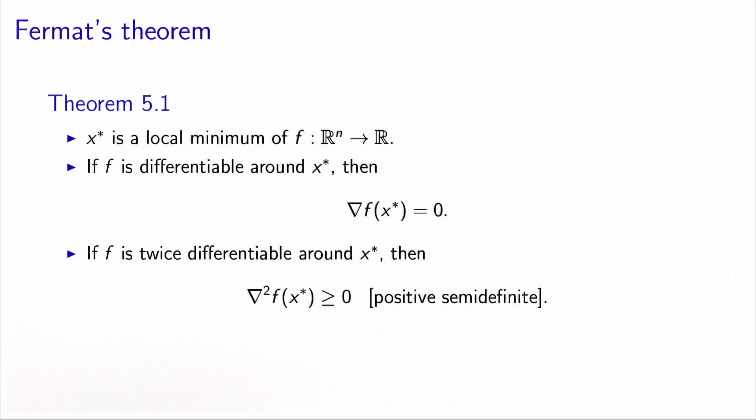Moreover, if f is twice differentiable around x star, then the Hessian matrix at x star, the second derivative matrix, is positive semi-definite.